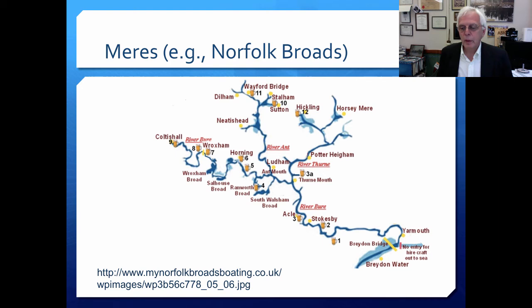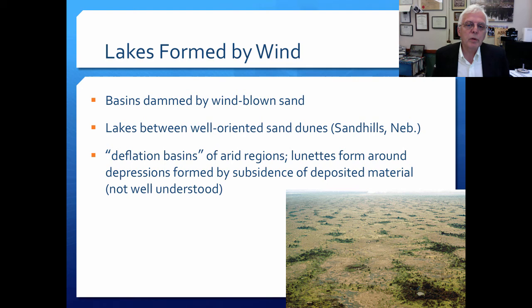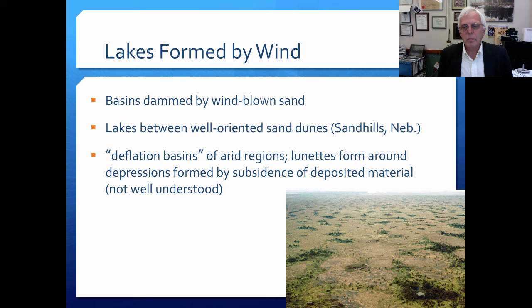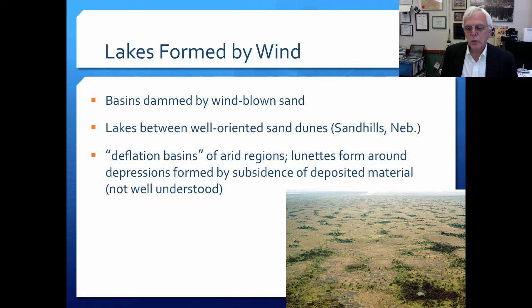Lakes can also be formed by wind. Basins can be dammed by windblown sand, and in areas with well-oriented sand dunes, depressions form between them. These are the Sandhills in Nebraska — a bunch of little lake systems formed between closely-oriented sand dunes. In other areas, deflation basins or lunettes form famously from drifting sand, and if there's enough precipitation, lakes form in those areas with a lot of windblown material.